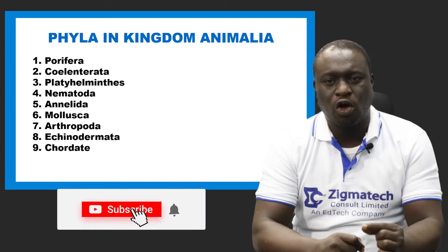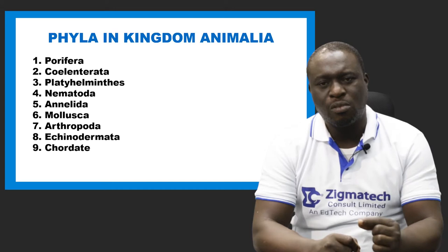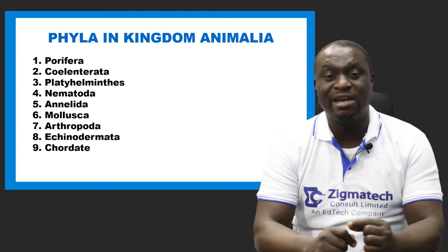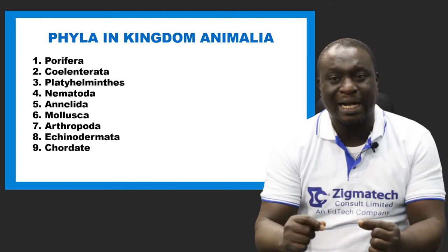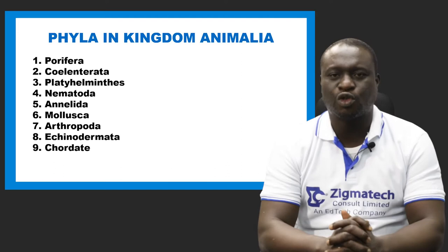Please take note: from phylum one to eight — Porifera, Coelenterata, Platyhelminthes, Nematoda, Annelida, Mollusca, Arthropoda, and Echinodermata — they are all invertebrates. They do not have backbones. And then number nine, Chordata, has a backbone. It is a vertebrate.